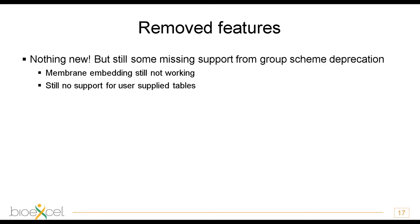Moving on to things we removed: the good news is that nothing new has been removed for this year. Last year the group scheme was finally removed after being deprecated for years. There are still a few features not yet working — mainly membrane embedding — which we hope to bring back. We also haven't yet added support for user-supplied tabulated interaction formats for non-bonded interactions, but that is work in progress and I promise it will be in GROMACS 2022.